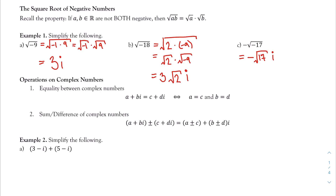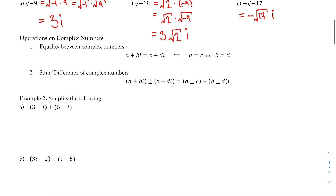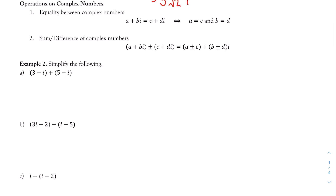Now that we've introduced i into our world, we should be able to perform common operations on complex numbers: addition, subtraction, multiplication, and division. Let's talk about some properties. Two complex numbers are equal if and only if their real parts are equal and their imaginary parts are equal. For addition and subtraction, the formula looks complicated, but it simply means we are combining like terms. Let's get some practice.